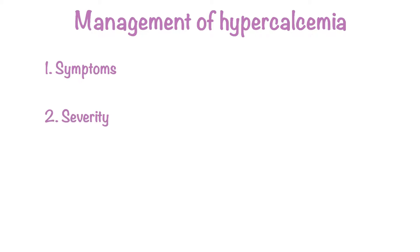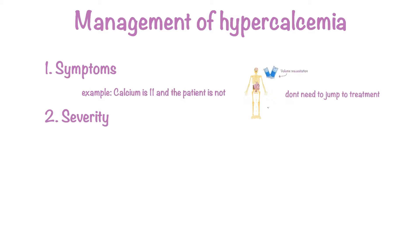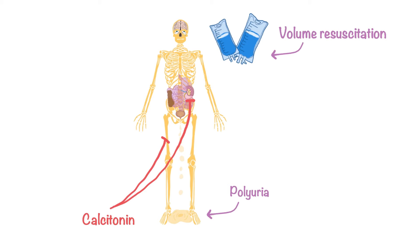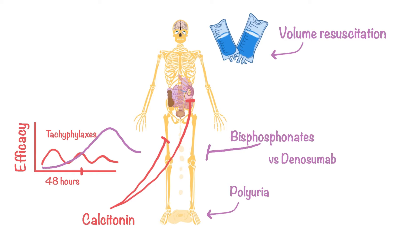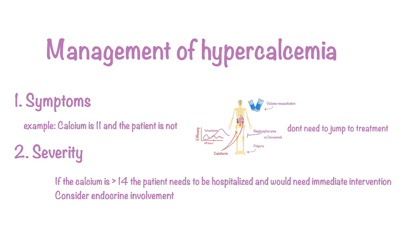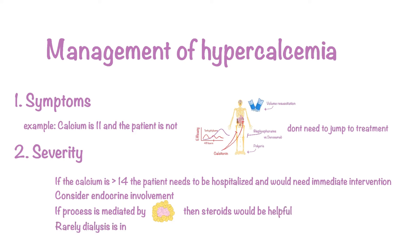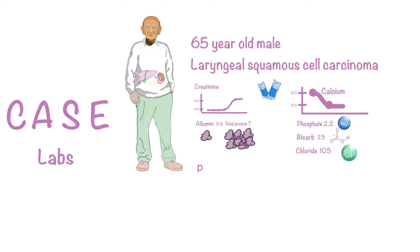Management of hypercalcemia really depends on symptoms and severity. For symptomatic patients, volume resuscitation is important because these patients are typically volume-depleted from polyuria. Calcitonin can be used if necessary but has a narrow therapeutic window, as it causes tachyphylaxis quickly in about 48 hours. Bisphosphonates can be used in conjunction, as they take around 48 hours to work. Denosumab is also a consideration, but typically endocrine should be involved at that point. If the process is mediated by a granulomatous disease like sarcoidosis, steroids should be very helpful. Very rarely, dialysis is indicated if calcium is 18 to 20, which commonly coexists with renal failure.